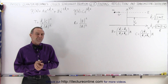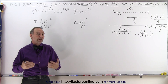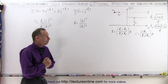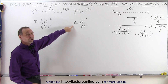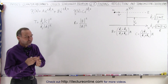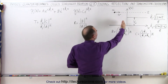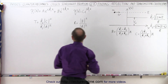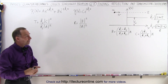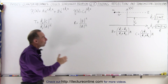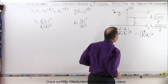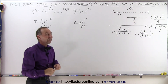Welcome to our lecture online. We're now finally ready to find the reflection and transmission coefficients. The reflection coefficient R is the fraction or percentage of the particles that are reflected off the potential step. The transmission coefficient T is the percentage or fraction of the particles that are actually transmitted past the potential step.